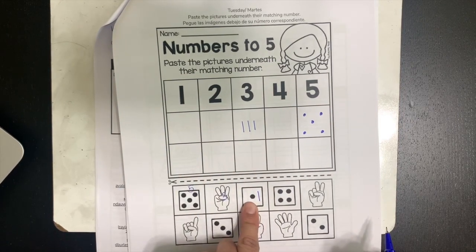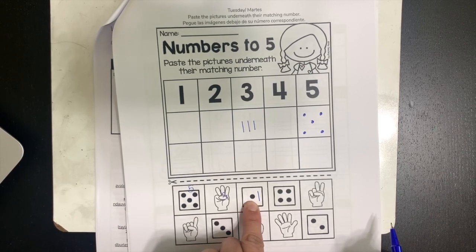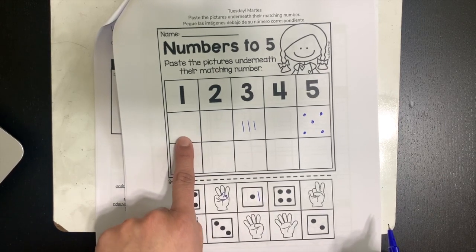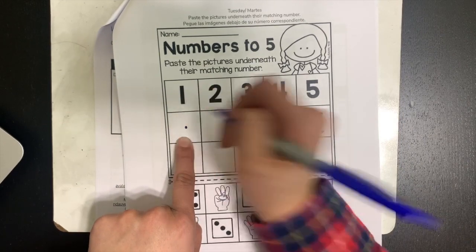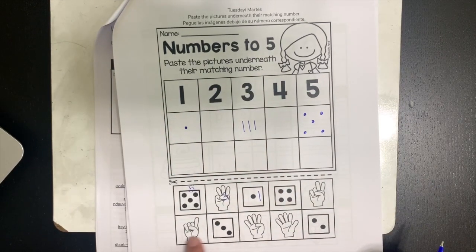For this next one, the 1 dot, I'm going to find the number 1 and draw the same picture in the first box. 1. Now you do the rest on your own.